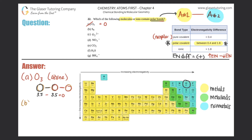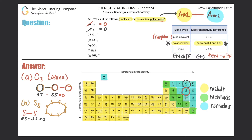Next, part B is S₈. S₈ actually looks like an octagon with eight sulfurs at every connection point. All the bonds are sulfur-to-sulfur. Sulfur's electronegativity is 2.5, so we have 2.5 and 2.5. Subtracting them gives zero, which does not fall between 0.4 and 1.8, so B is out.